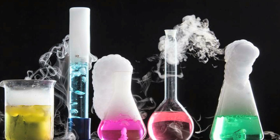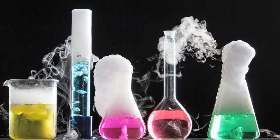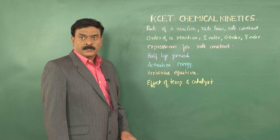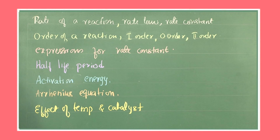In Chemical Kinetics, what we need to study for proper preparation for CET exams is: rate of a reaction, rate law, rate constant, order of a reaction — first order, zero order, second order — expressions for rate constant, half-life period, activation energy, Arrhenius equation, and effect of temperature and catalyst.